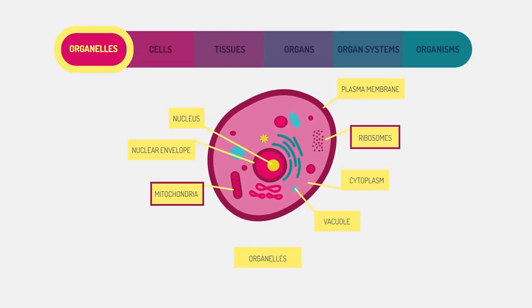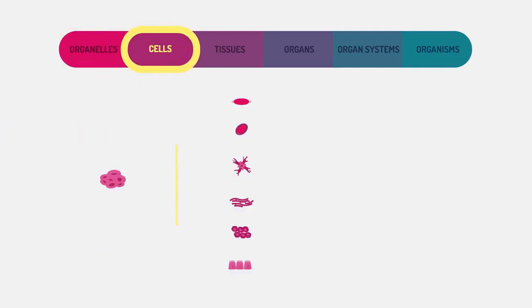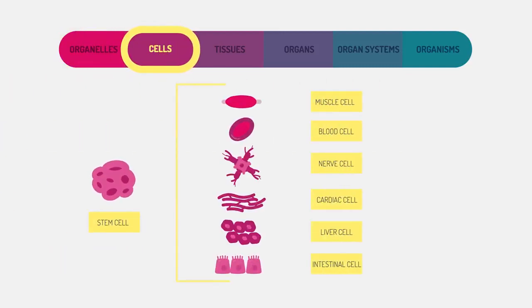Cells themselves are the basic structures that make up living organisms. In multicellular organisms, they are differentiated to carry out different roles. Here are a few specialized human cells.